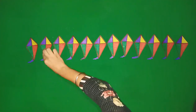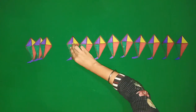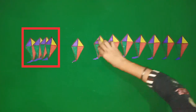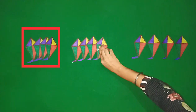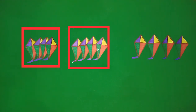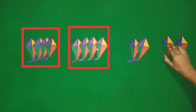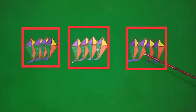Let's start. 1, 2, 3, 4. There is 1 group of 4 kites. 1, 2, 3, 4. Now there is 1 more group of 4 kites. 1, 2, 3, 4. Now there is another group of 4 kites.